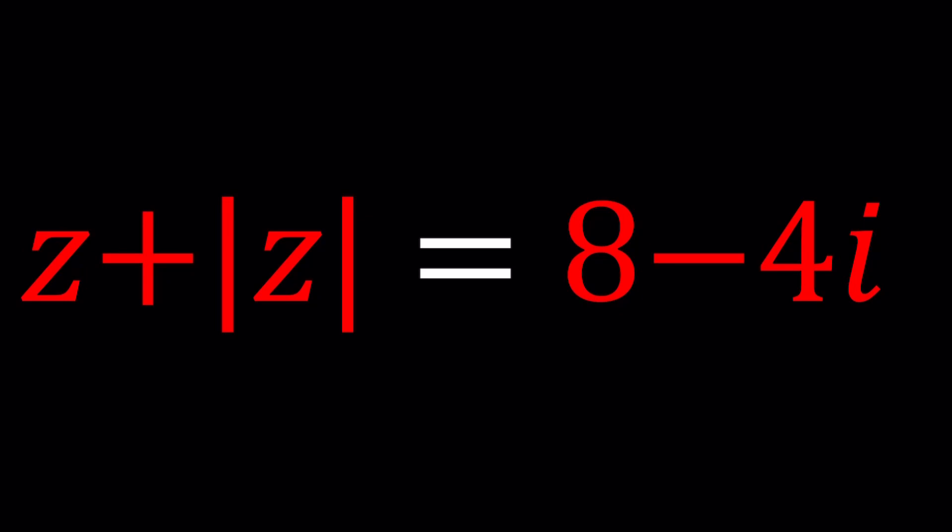Even though there might be different variations, especially when absolute value is involved, I don't think we have a lot of choices, but here's what we can do. Since Z is a complex number, we can use the standard form of a complex number. It's totally up to you which variables you like to use, but I like to use A plus BI or X plus YI. A plus BI is the name of the channel, by the way. But anyways, let's go ahead and use Z equals X plus YI.